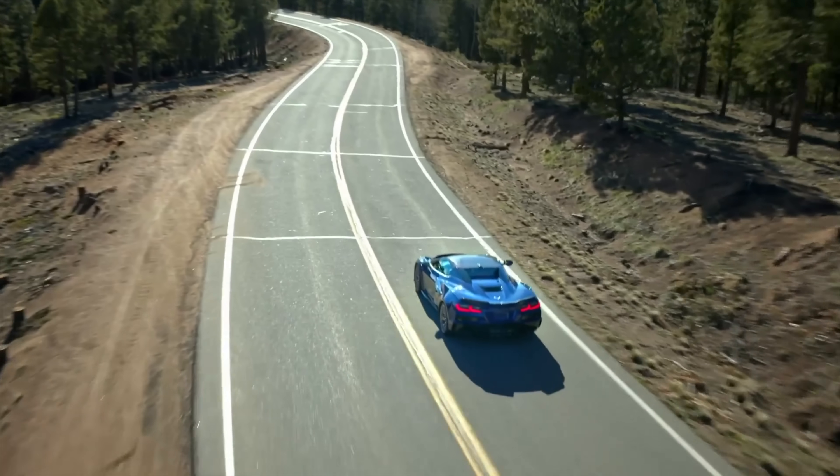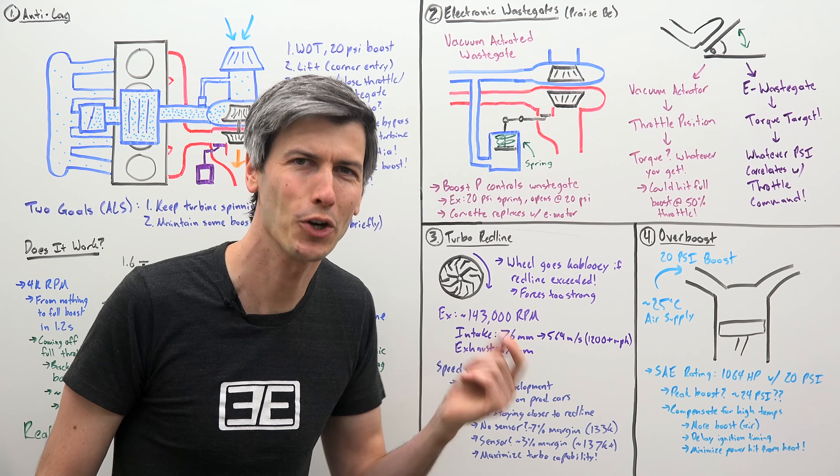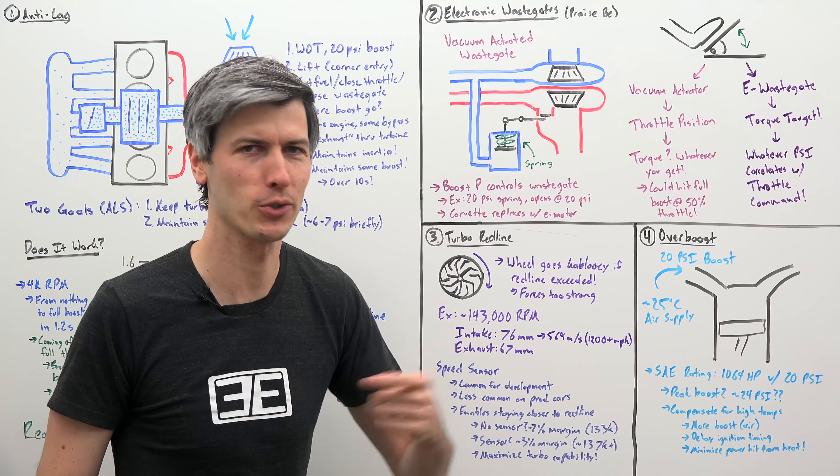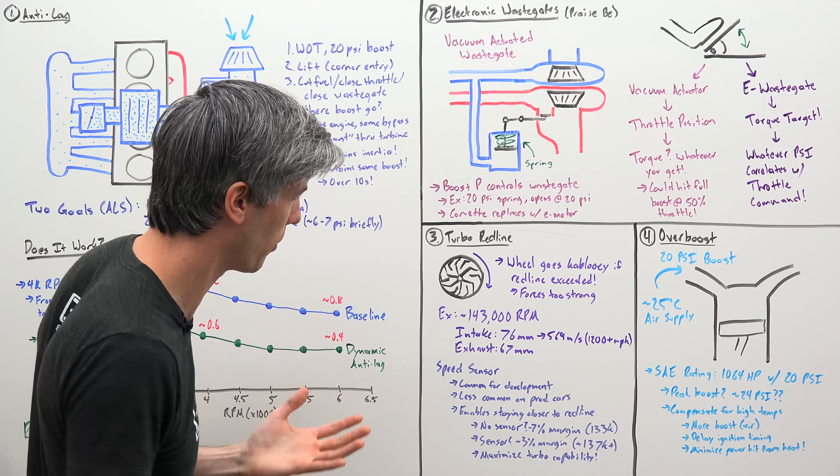So let's move on to some other neat strategies the Corvette ZR1 implements. The first one discussing turbocharger red line. So at a certain point, as that turbocharger spins faster and faster, it just spins so fast that the forces are so great that it just shreds it apart.